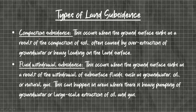The first type is compaction subsidence. This occurs when the ground surface sinks as a result of compaction of soil, often caused by over-extraction of groundwater or heavy loading on land surfaces like building of heavy infrastructure.